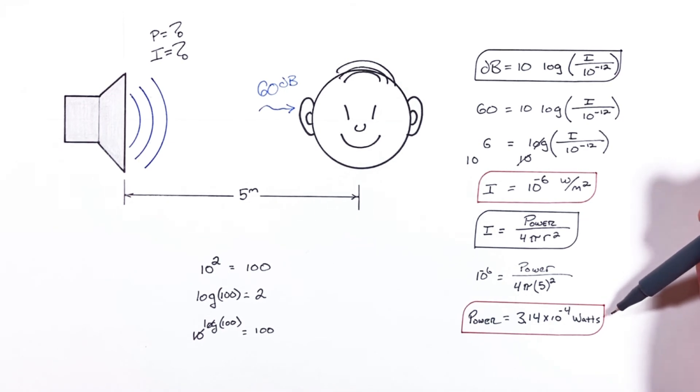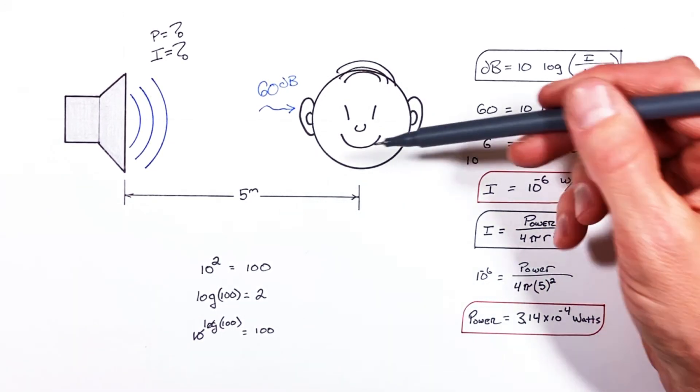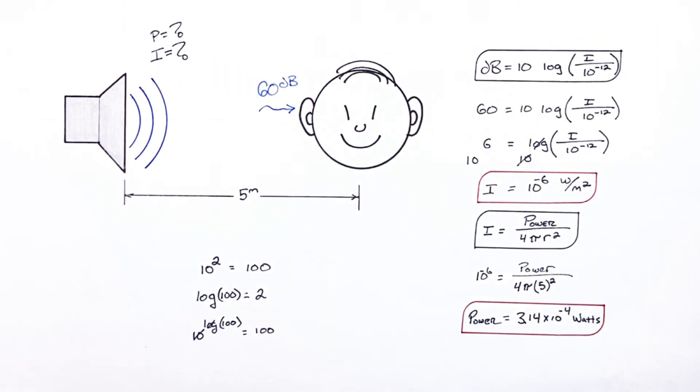And we find the power is 3.14 times 10 to the negative 4th watts. So this is how given decibels you can solve backwards for intensity and power.